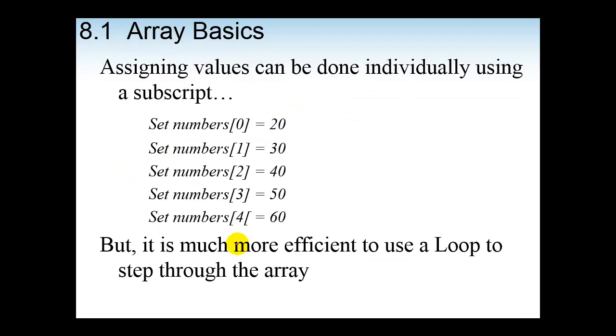Now we can assign our values individually, such as set numbers, give this element this value. And then I want you to go in and have my program set the value of 30 in our element for 1. But it's a lot more efficient to just use a loop and let that value assigned, let that get assigned as it's being stepped through the array. So let your loop step through and assign those values.